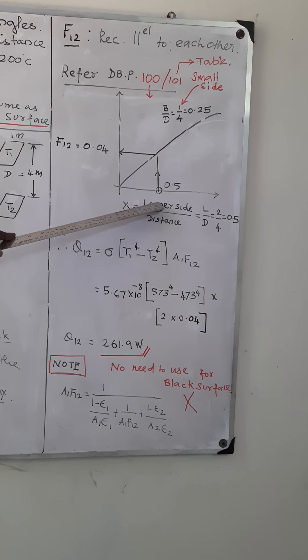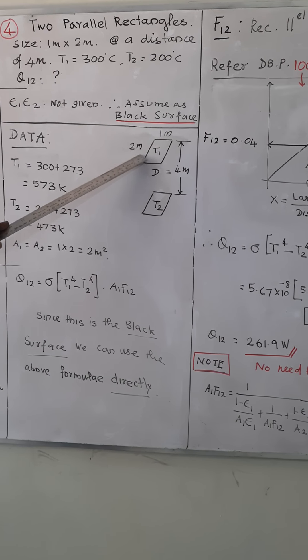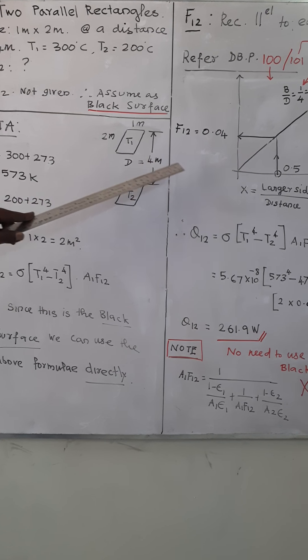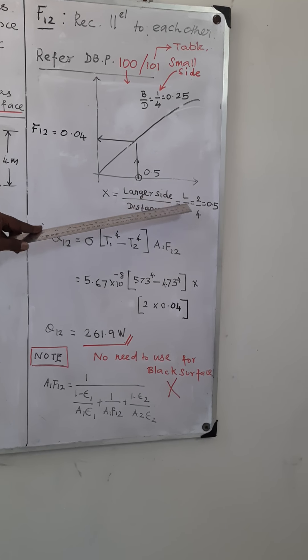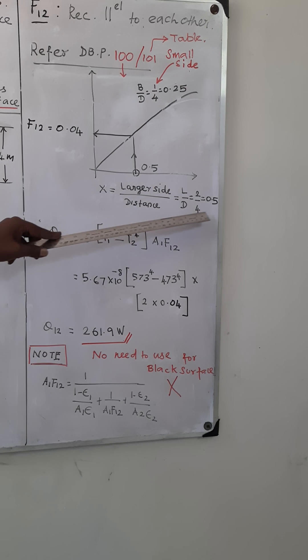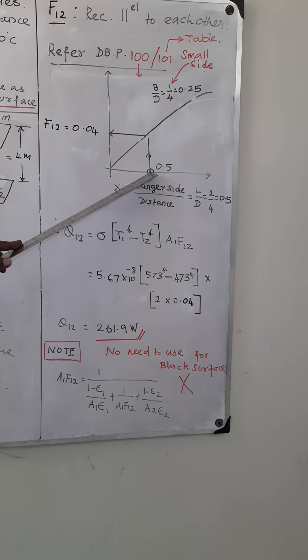If you look at the diagram here, L represents the larger side, that is 2 meters, divided by distance, 4 meters. So L divided by D is 2 divided by 4, so I am getting x value as 0.5. So fix 0.5 on your x-axis.